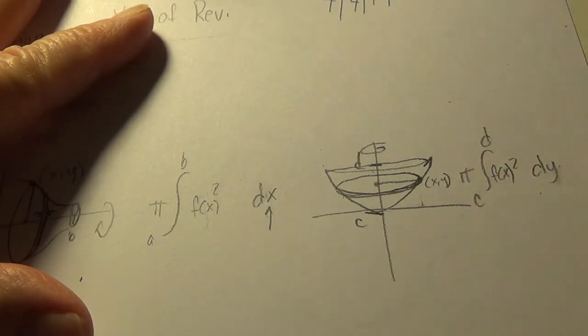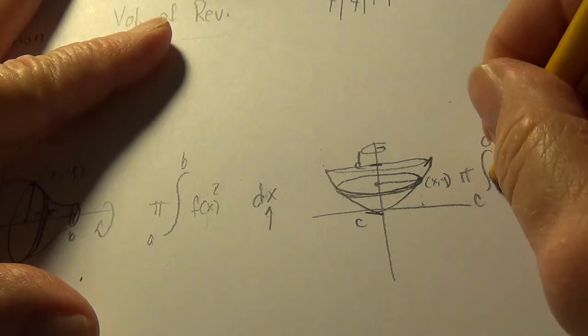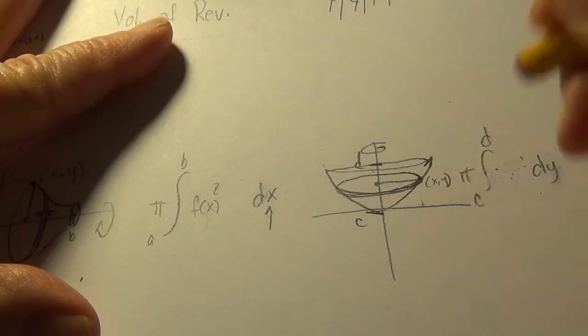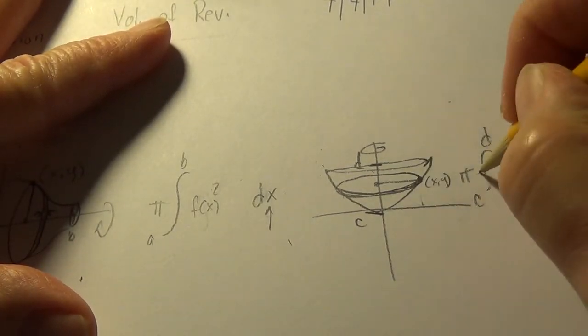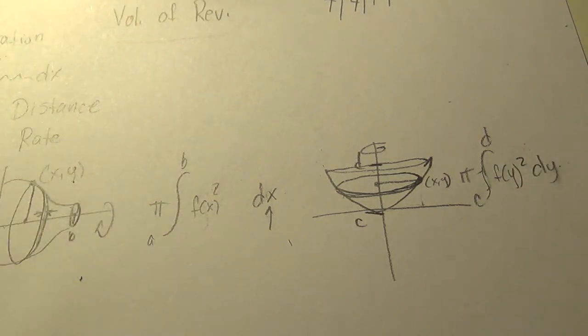f of y doesn't come out naturally, so f of y quantity squared. Again, that's in theory.